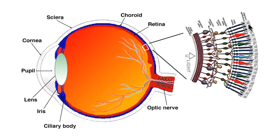Wait — light is coming in and has to go all the way through these layers in order to begin the process? That's right. It's just inside out from how a logical person would have designed it for the best visual acuity.